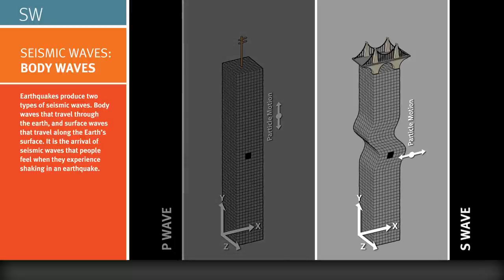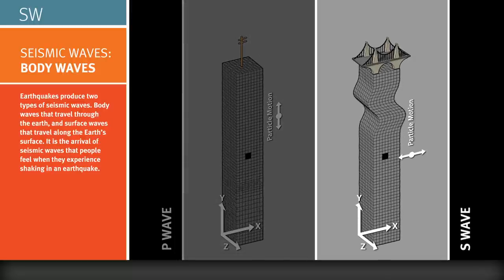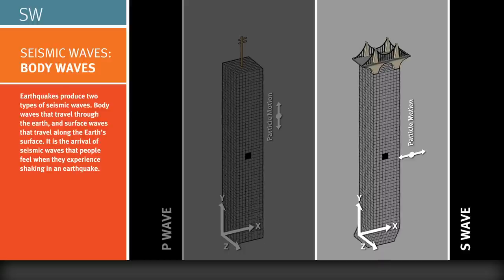The S wave, or secondary wave, is a body wave that travels through the interior of the Earth with a shearing motion. S waves cannot travel through liquids, including the Earth's liquid outer core.